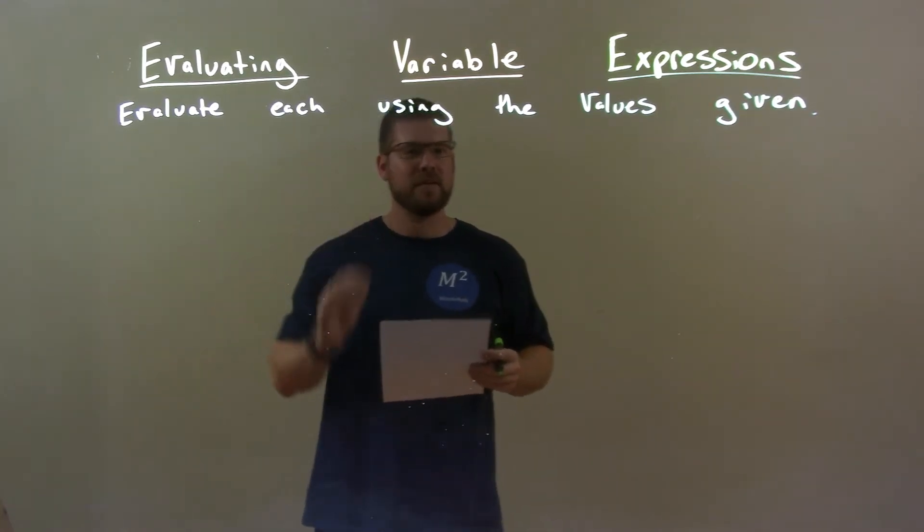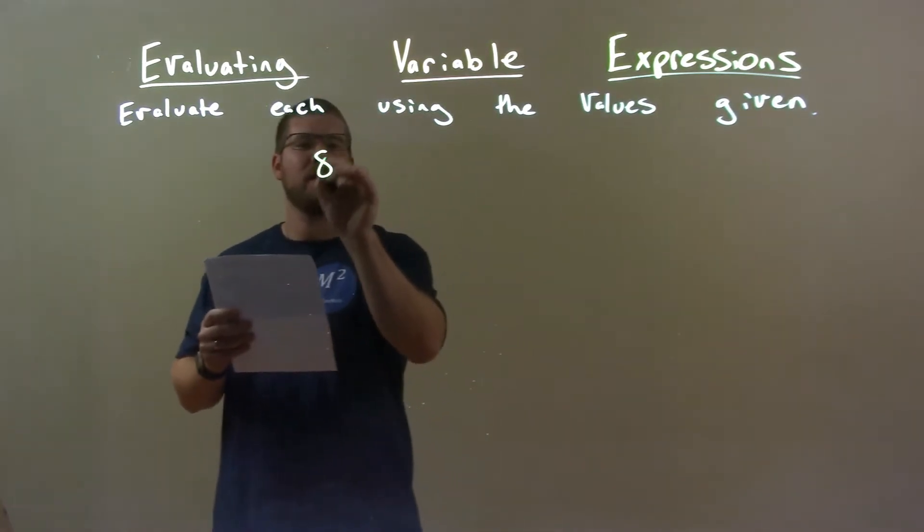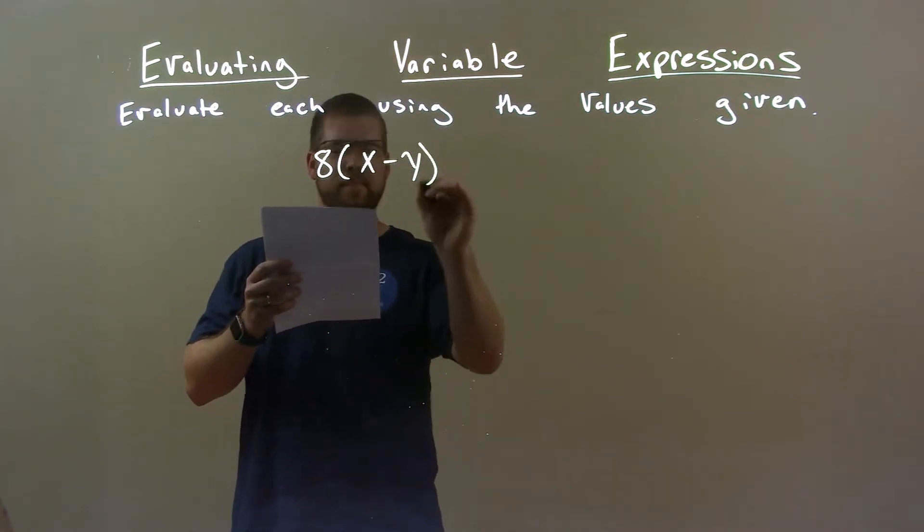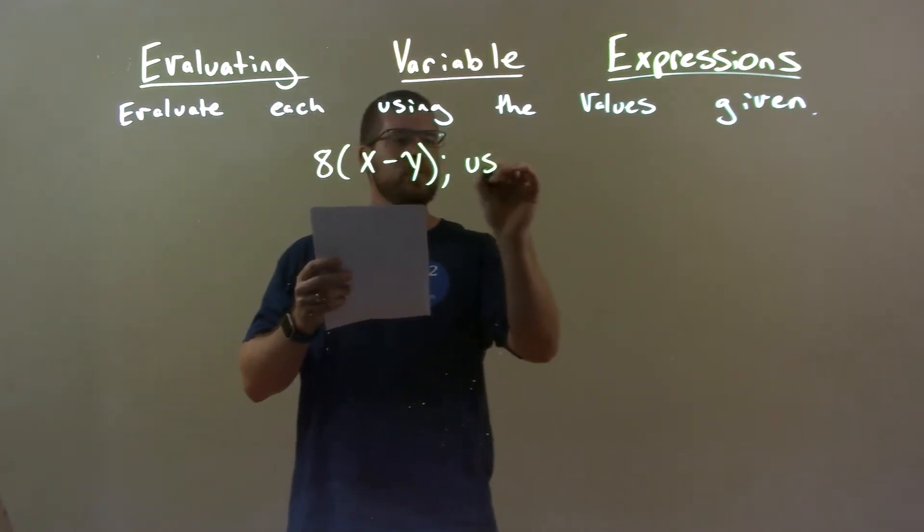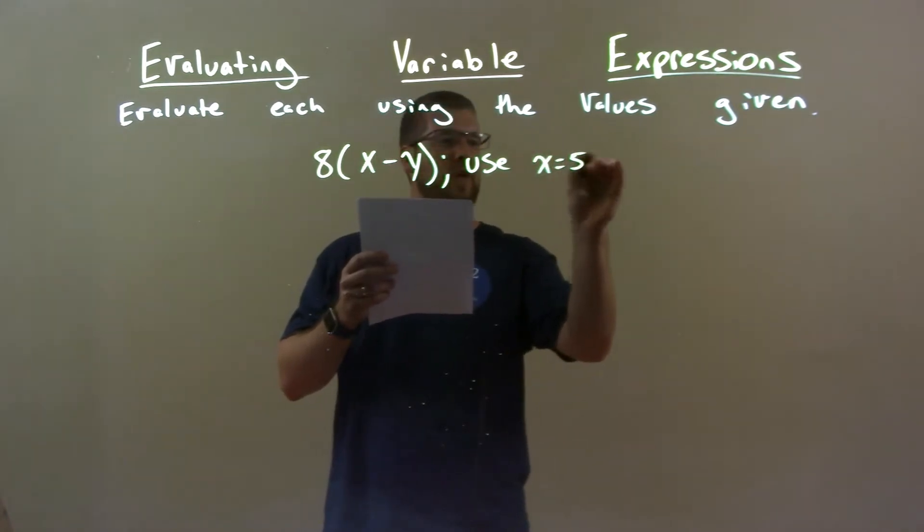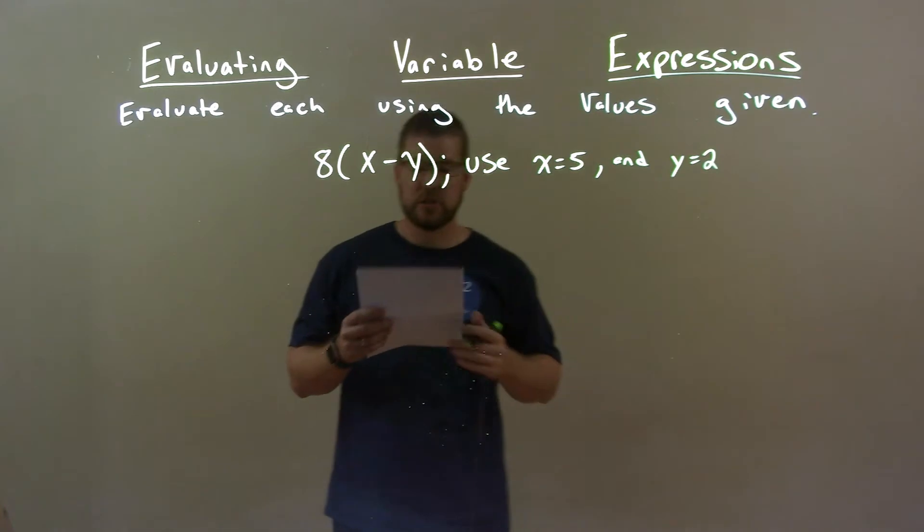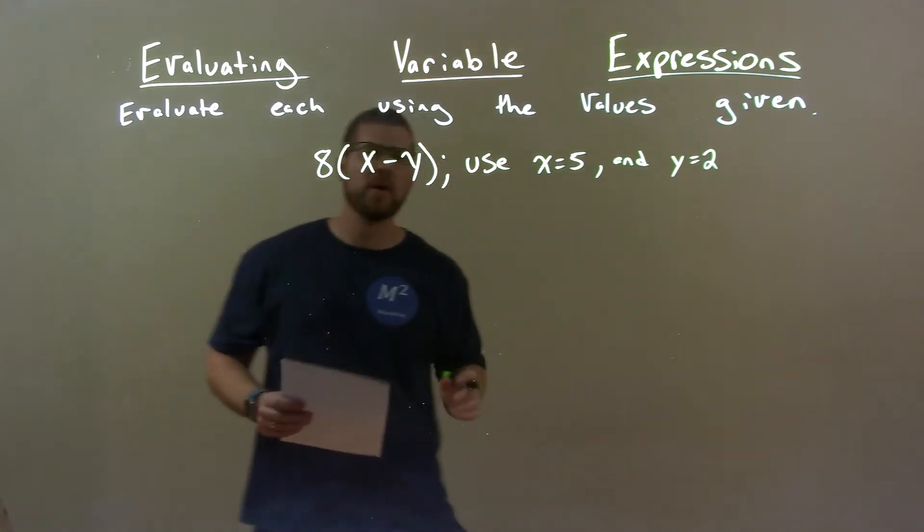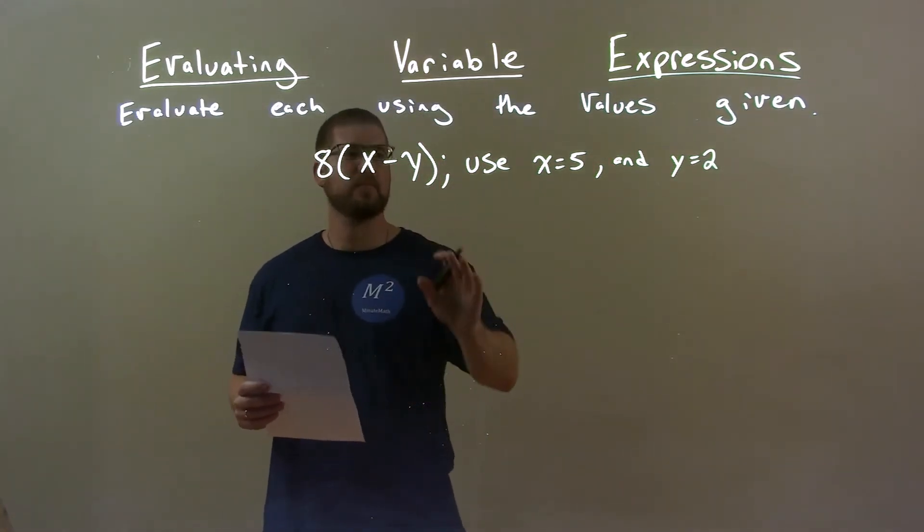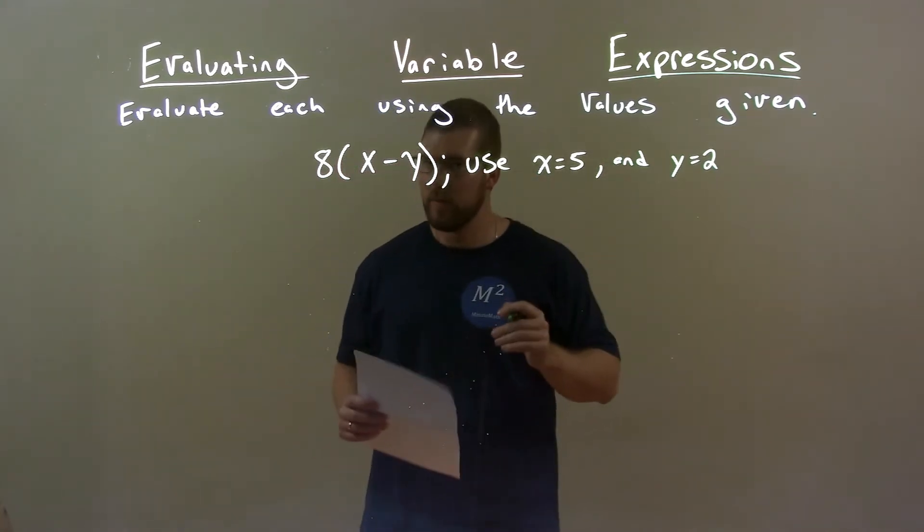So, if I was given this expression 8 times x minus y, I'm going to use x equal to 5 and y equal to 2. So all we're going to do is take this expression and substitute 5 and 2 for x and y respectively.